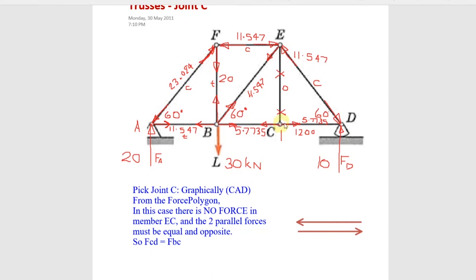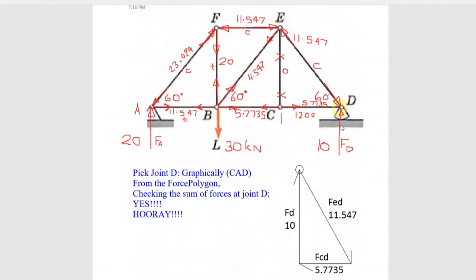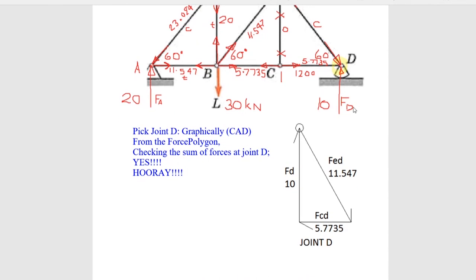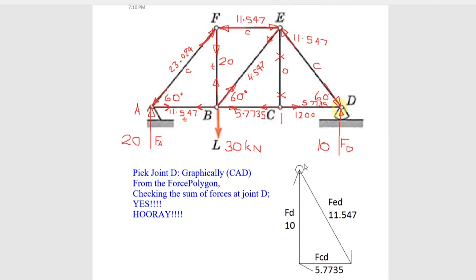We've solved joint C — member CD equals member BC, so 5.77 carries across. That also completes joint D. But let's double-check D. Member ED was pushing up, so at D it pushes down. Member CD was pulling to the right, so at D it pulls to the left — 5.77 to the left. The ground pushes up with 10. Drawing that force polygon — push down, pull 5.77 left, push up by 10 — it closes to zero. So the numbers are correct. One of the nice things about the method of joints is that when you reach the end, you can double-check yourself because the result should match the known reaction of 10.